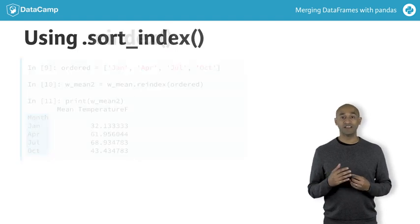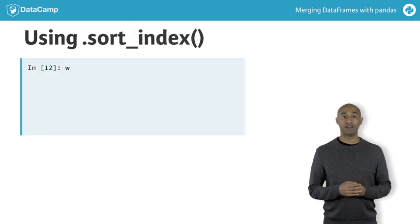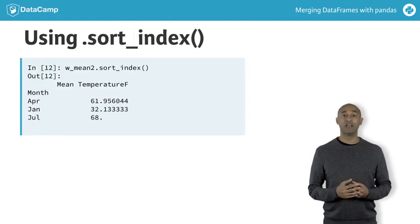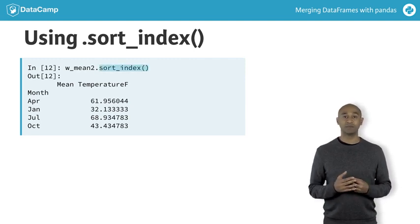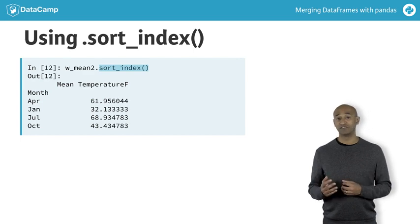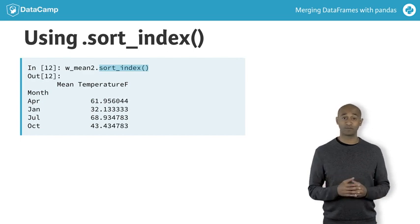The original alphabetically ordered data frame can be recovered with the data frame sort_index method. Pandas index labels are typically sortable data, such as numbers, strings, or datetimes.